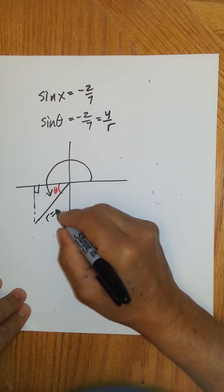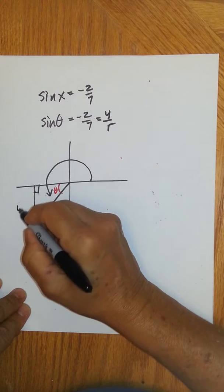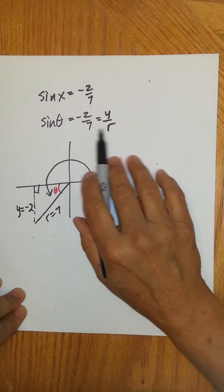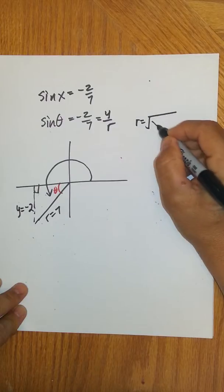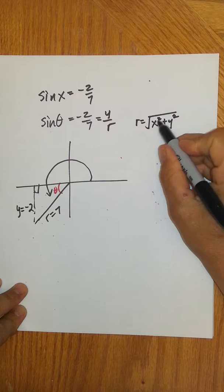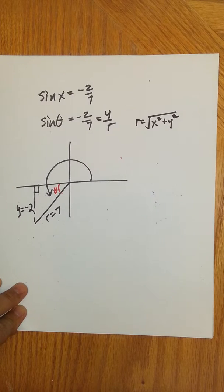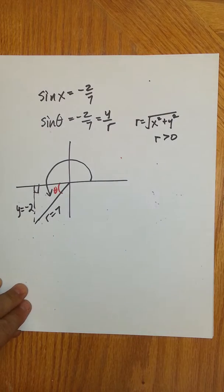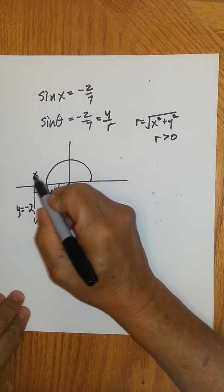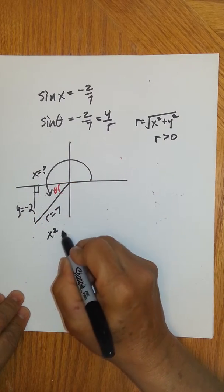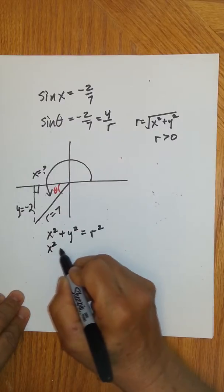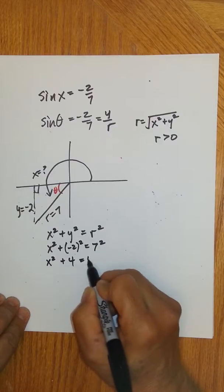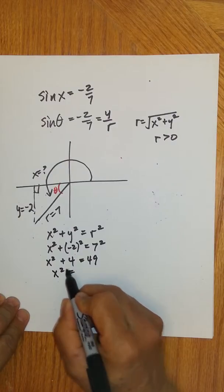So y over r equals negative two-sevenths. R is seven, so we can put that in for the radius. The y is going to be negative — in quadrant three, y is always negative. R is always positive because r is the square root of x squared plus y squared; squaring always gives a positive, so the negative sign goes with the numerator. Now we can find x using the Pythagorean theorem: x squared plus negative two squared equals seven squared, so x squared plus four equals forty-nine, giving x squared equals forty-five.